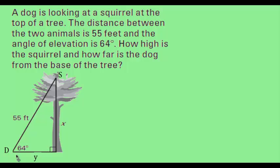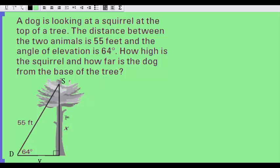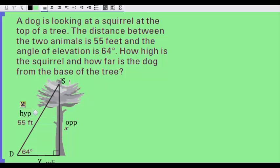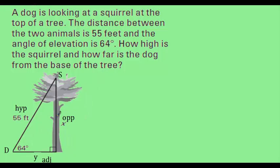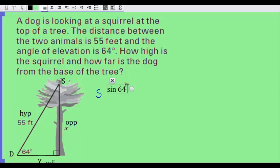To solve for the height of the tree and the distance the dog is from the tree, let's label the triangle first. With the 64-degree angle, the height is the opposite side and the dog's distance is the adjacent side, while 55 is the hypotenuse. To find X, the height of the tree, opposite over hypotenuse is what we use — that's sine. The sine of 64 degrees equals opposite over hypotenuse, which is X over 55.